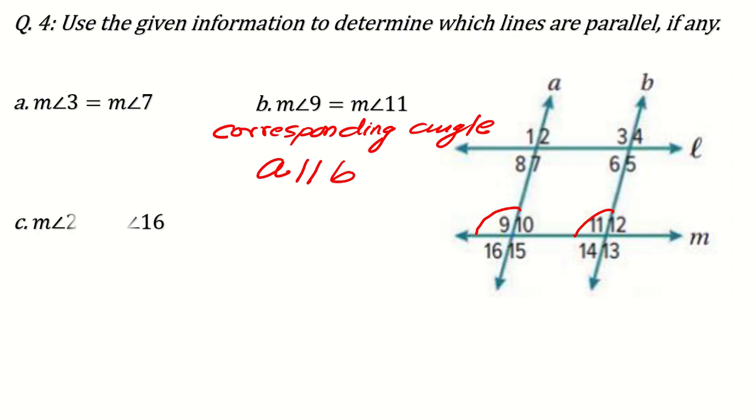Now another part of the question can be measurement of 2 is equal to measurement of 16. So here 2 is this side, 16 is this one. You see 2 is exterior angle, 16 is also on another side of the line but exterior angle. So what type of angles are they? Alternate. What I told you, alternate means different side of the line. So alternate exterior angle. Why exterior? Because they are on the outside of the line.